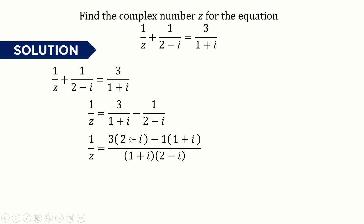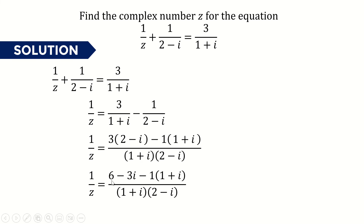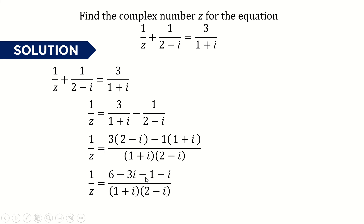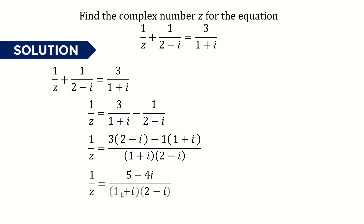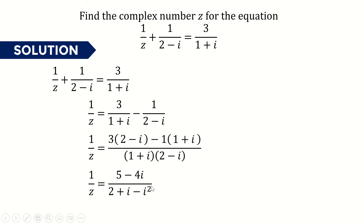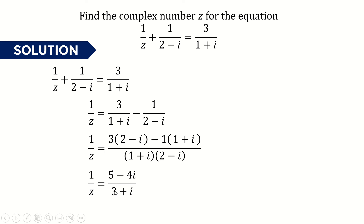We can simplify this fraction. Expanding the numerator: 3 times (2 minus i) gives 6 minus 3i, and negative 1 times (1 plus i) gives negative 1 minus i. Combining: 6 minus 1 is 5, and negative 3i minus i is negative 4i, so the numerator is 5 minus 4i. For the denominator, expanding (1 plus i)(2 minus i) gives 2 minus i plus 2i minus i squared. Since i squared equals negative 1, we get 2 plus 1 equals 3, plus i, so the denominator is 3 plus i.